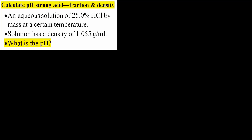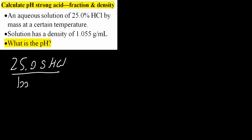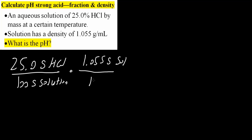The first step is to use the mass percent information. So 25% by mass means 25.0 grams of HCl per 100 grams of solution. Now we will use the density. The solution has a density of 1.055 grams per mL, meaning 1.055 grams of solution per 1 mL.